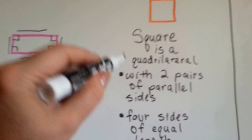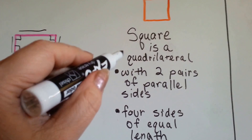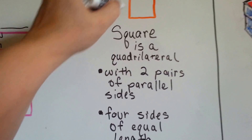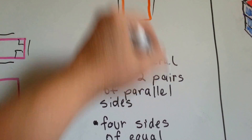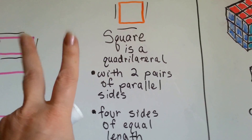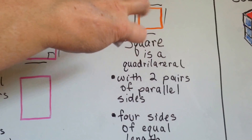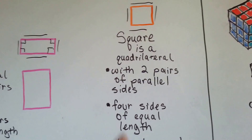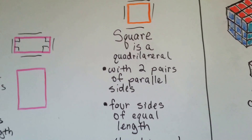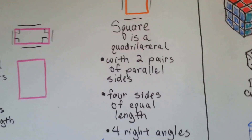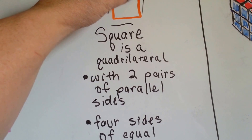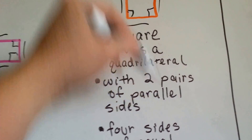Let's look at a square. A square is a quadrilateral, a four-sided shape, with two pairs of parallel sides. This side is parallel to that side, and this side is parallel to that side — two pairs. Four sides of equal length; all four of its sides are the same length. And it's got four right angles, just like the rectangle: one, two, three, four right angles.